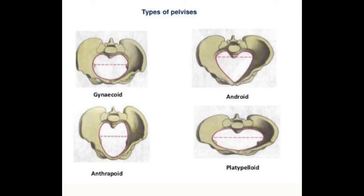The third pelvic shape type is referred to as the android pelvis. This pelvis shape is found in about 20% of birthing individuals. The inlet of this pelvis type is heart-shaped. The mid-pelvis diameter is reduced in size. The sacrum is typically flat, long, and narrow with a forward incline. The side walls are convergent and the ischial spines are prominent. The pubic arch is both narrow and deep.